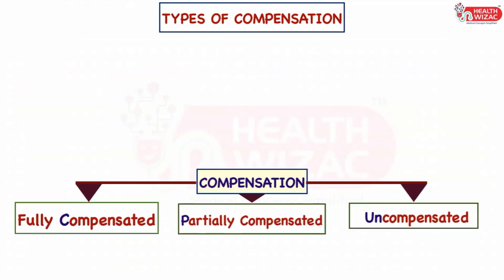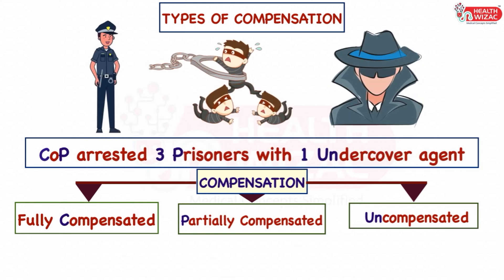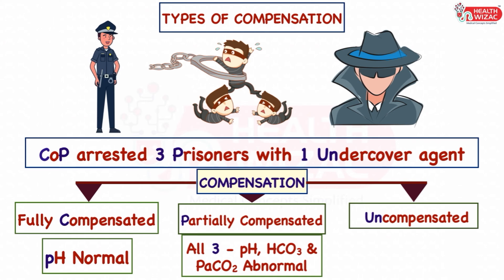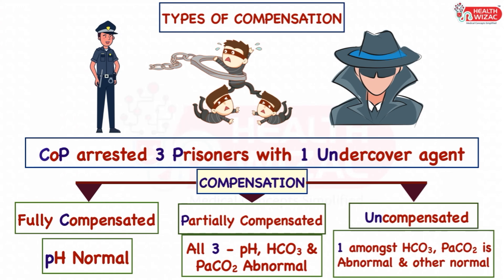Compensation usually happens in three ways: fully compensated, partially compensated, or uncompensated. To remember this, I use the phrase: 'cop arrested three prisoners with one undercover agent.' An acid-base disorder is fully compensated if pH is normal — indicated by C and P in 'cop,' where C stands for compensation and P for pH. In partial compensation, all three parameters — pH, bicarbonate, and PaCO2 — remain abnormal, indicated by '3' and 'P.' In uncompensated disorder, one of bicarbonate or PaCO2 remains normal while the other is abnormal, indicated by '1' and 'UN.'